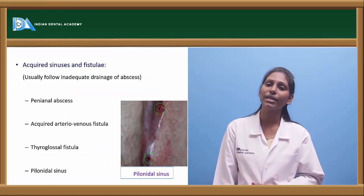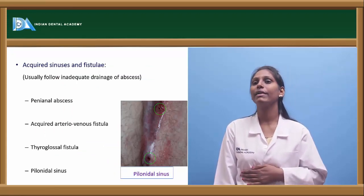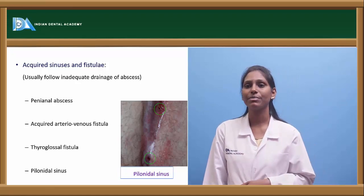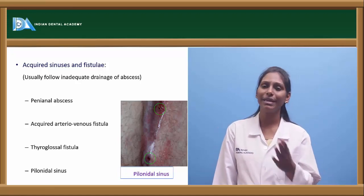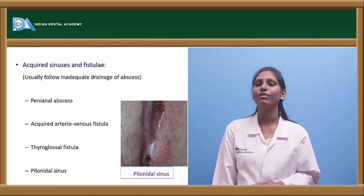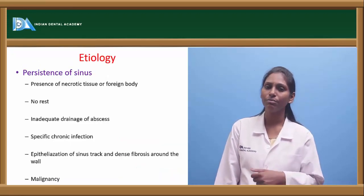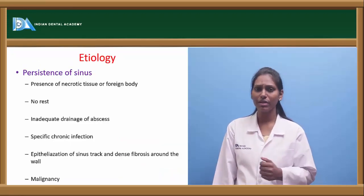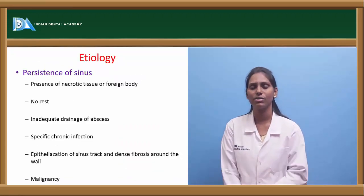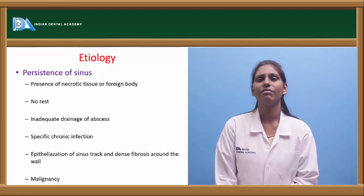Certain acquired fistulas include those following inadequate drainage of an abscess, perianal abscesses, acquired arteriovenous fistula, thyroglossal fistula, and pilonidal sinus, among other examples.